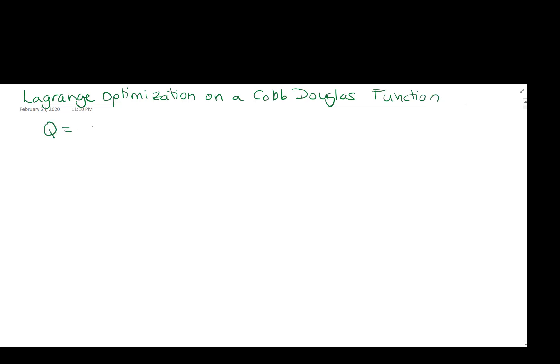So the function is the following: Q equals 60K to the 0.8, L to the 0.2. This is what we call a Cobb-Douglas function when you have your two variables each to some exponent here and they're being multiplied by each other and multiplied by a constant. Now let's say that capital has a cost of $40 per unit and labor has a cost of $60 per unit.